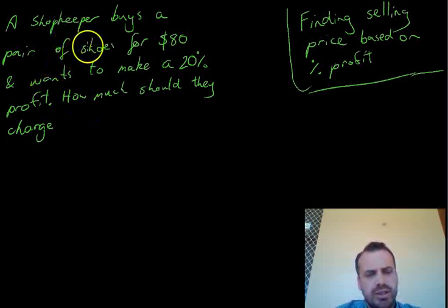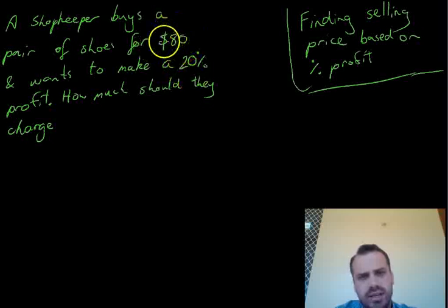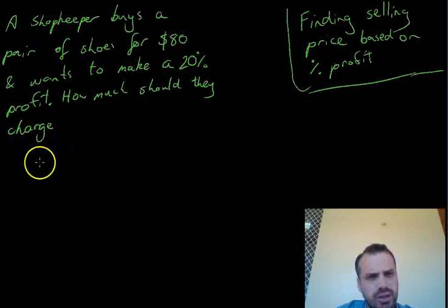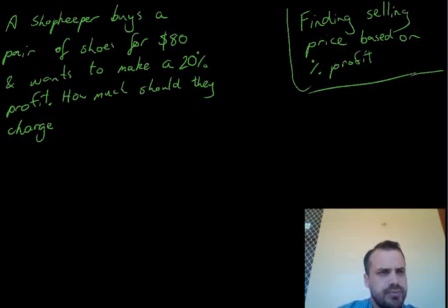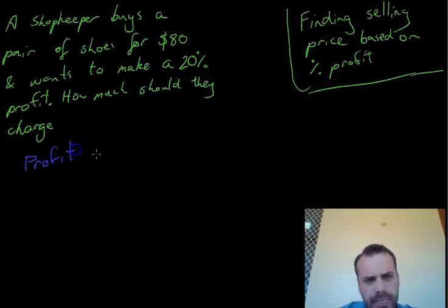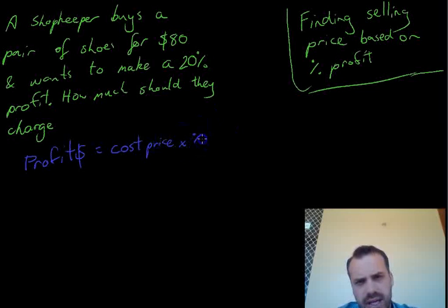Now for a question like this, first of all we need to find 20% of $80, because we want to make that 20% profit. So profit, let's change our colour there so we can differentiate it a bit better. So profit in dollars equals the cost price times the percentage profit.